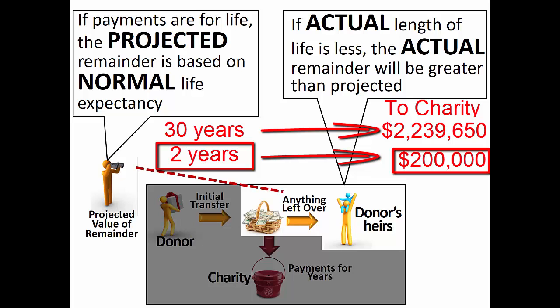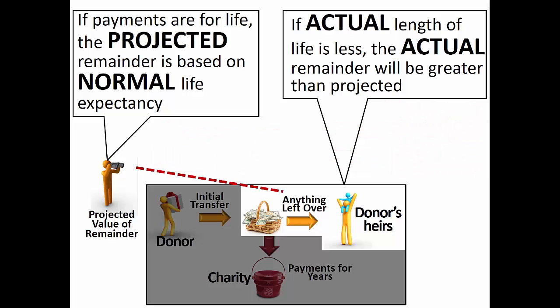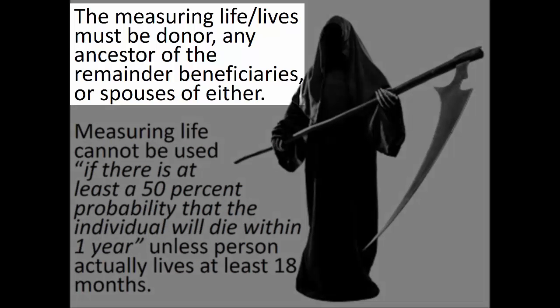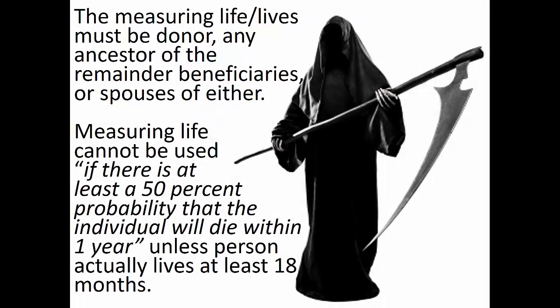Recognizing this reality led to the practice of creating "viatical charitable lead trusts," also known as "vulture charitable lead trusts," where the measuring life for the charity's payments would be a younger person with a terminal disease. In response, the law was changed to limit the people who can be named as the measuring life for a charitable lead trust. To prevent widespread viatical shopping, the measuring life is now limited to the donor, any ancestor of the remainder beneficiaries, or the spouse of either of these. Thus, taking advantage of a terminal diagnosis for tax planning purposes is still theoretically possible, but only within the much smaller close family group.